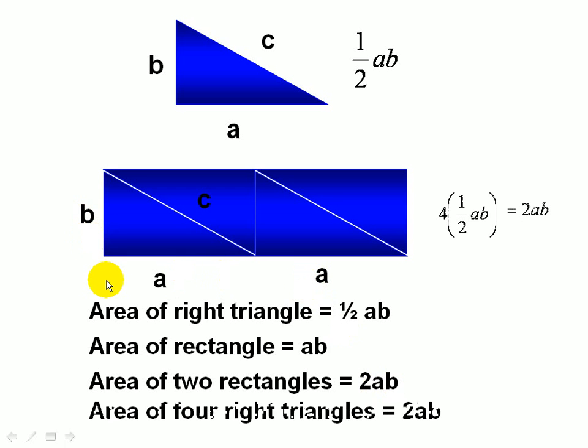We also note that the area of the four right triangles shown here is also 2AB, where we multiply one-half AB, which is the area of a triangle, times 4.